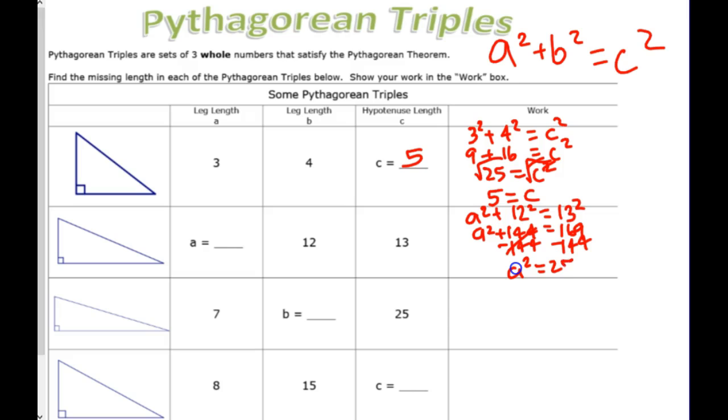Now, A squared equals 25. Once again, I must square root. So, whenever we're doing Pythagorean Theorem, your last step is always square root to get that side length.